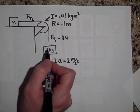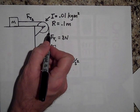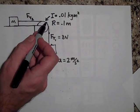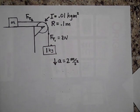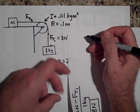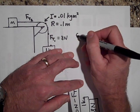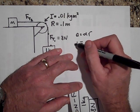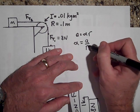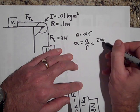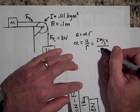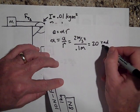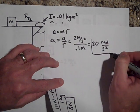A point on the rim of the pulley has the same tangential acceleration as the hanging mass — two meters per second squared. Using the relationship a equals alpha times r, alpha equals a over r, that's two meters per second squared divided by 0.1 meters, giving 20 radians per second squared.